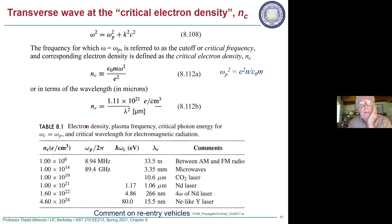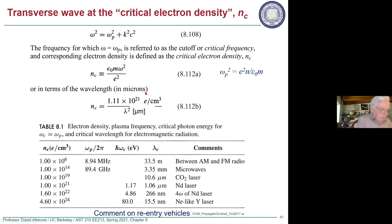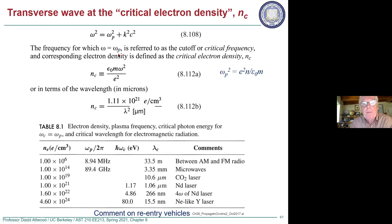Let me give some examples of the critical electron density. Here's our dispersion relationship. When omega is just equal to omega_p, the electron density is defined by that relationship. Substituting in, the critical electron density depends on omega squared, or inversely on lambda squared. Putting in numbers for all the natural constants, you get that the critical density is 1.11 × 10^21 electrons per cubic centimeter divided by lambda squared in microns.